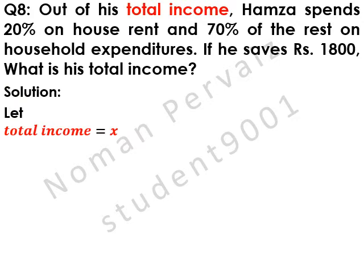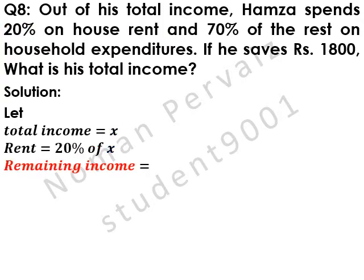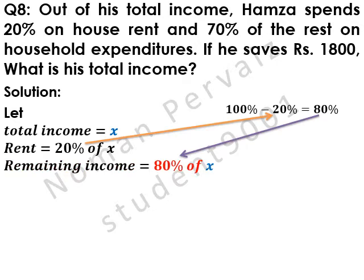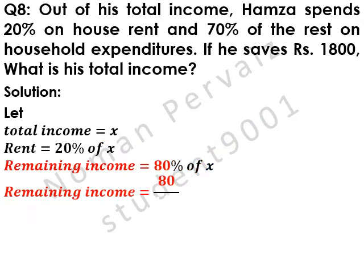Let total income be equal to x. Rent is equal to 20% of total income, which is x. Then, remaining income is equal to 80% of total income, which is x. Note that 100% minus 20% of rent becomes 80%. Remaining income is equal to 80 — the percent sign is removed by dividing the whole term by 100.